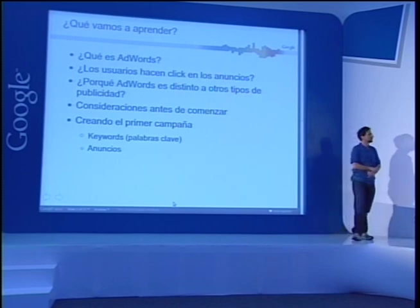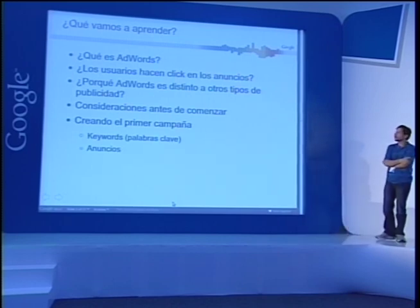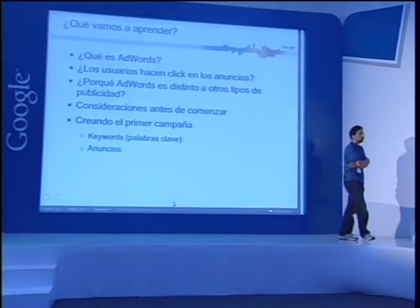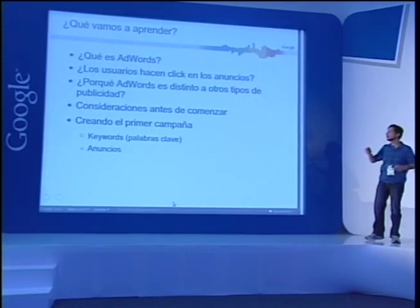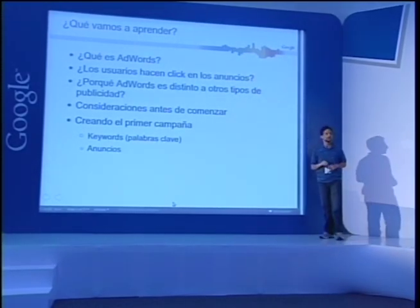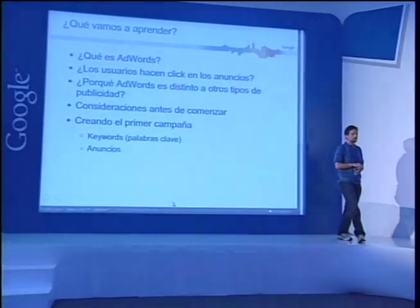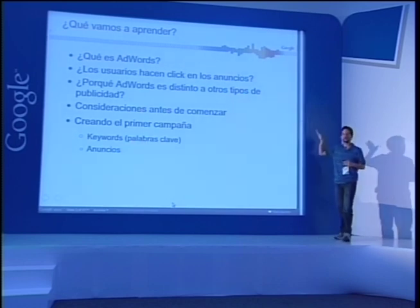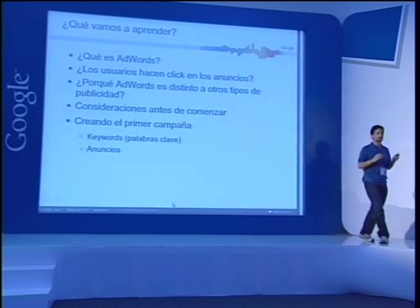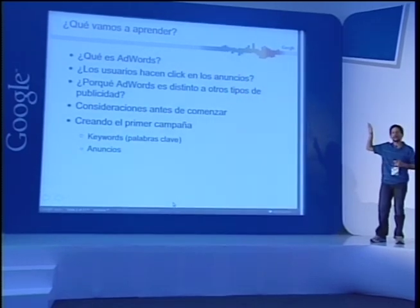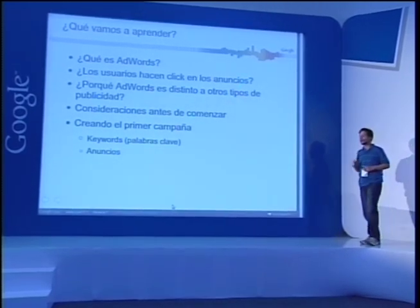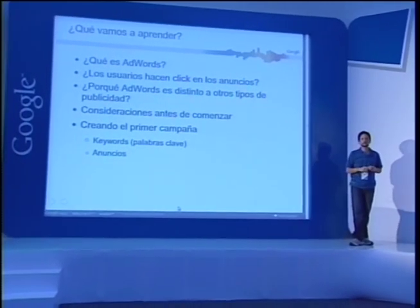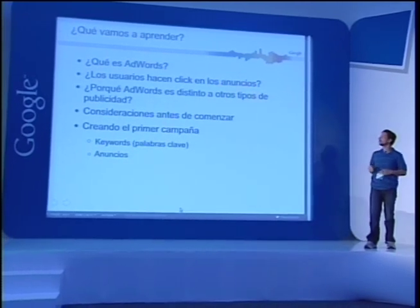La segunda pregunta que vamos a ver es la que todo el mundo me pregunta: ¿alguien hace clic en los anuncios de AdWords? Todo el mundo me dice que esos anuncios salen a la derecha y nunca hacen clic ahí. El 96% de las utilidades de Google anuales vienen de este programa. Básicamente la empresa se mantiene gracias a esta publicidad, entonces quiere decir que funciona. Tenemos anunciantes que todo su retorno de inversión viene a través de este tipo de campañas.